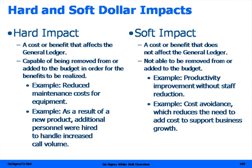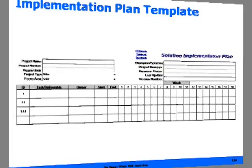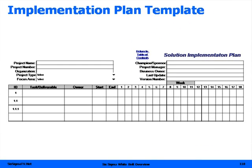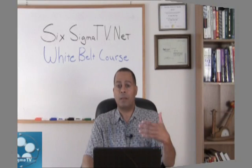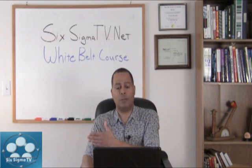Hard impact are things that go to the ledger. Soft are things like productivity improvement without staff reduction, cost avoidance, those kind of things. This next template is your implementation plan — how are we going to implement all of these solutions? Who's going to own them? What's the start and the end and the deliverable? You can pull this template down from our website, change it around and make your own. But this is your implementation plan on all of those piloted solutions — who's going to do it by when.